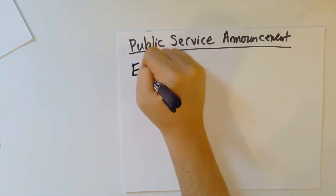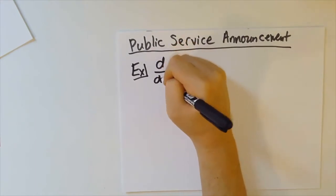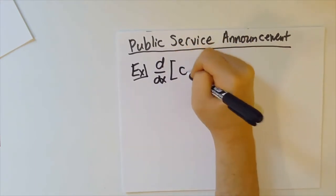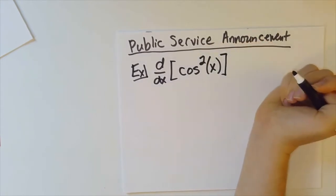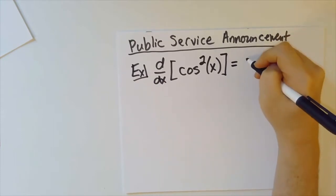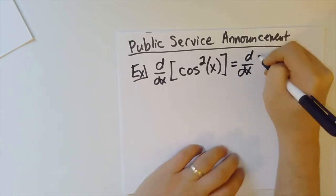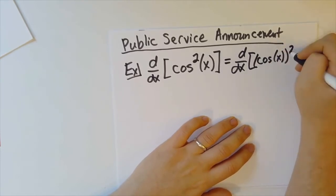I want to talk about something that's very tempting to do. We know how to take the derivative of something like cosine squared of x. To do that, we realize that's the same thing as the derivative of cosine of x all squared.